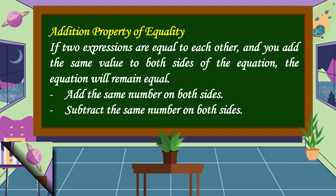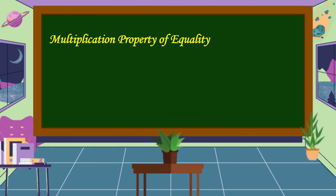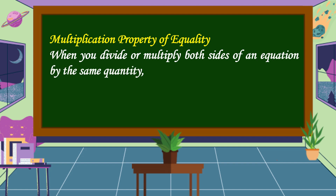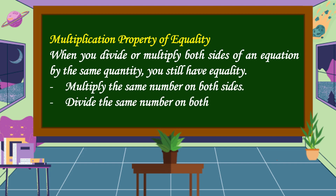The next property is the multiplication property of equality. When you divide or multiply both sides of an equation by the same quantity, you still have equality. Remember to multiply or divide the same number on both sides.